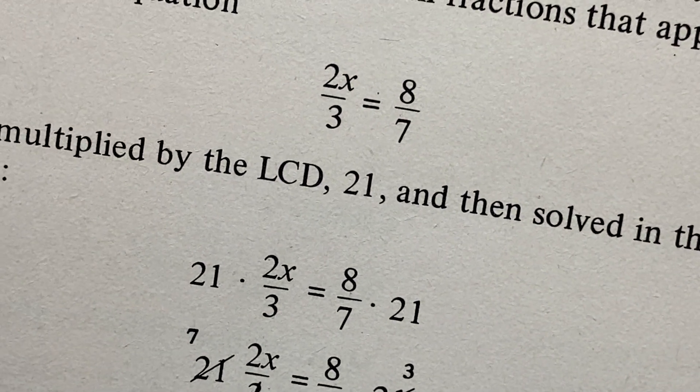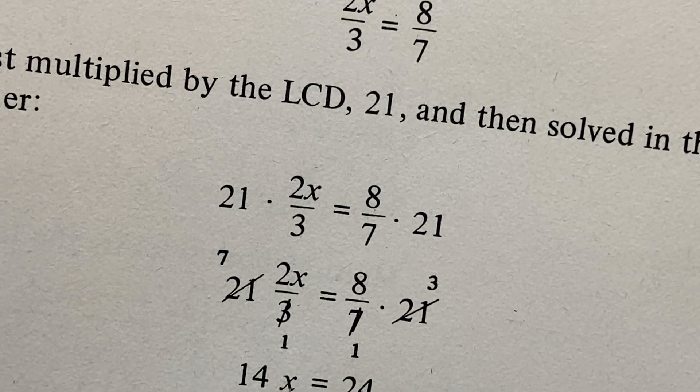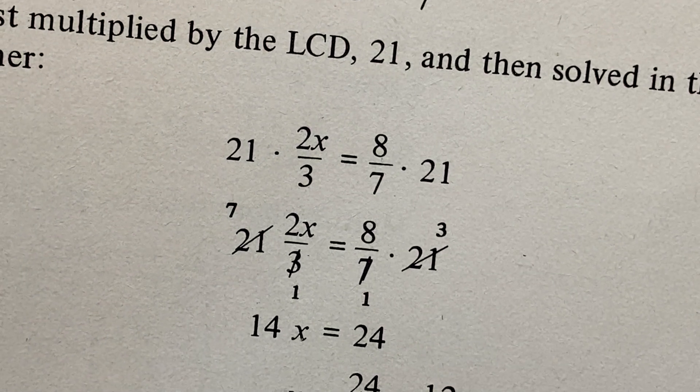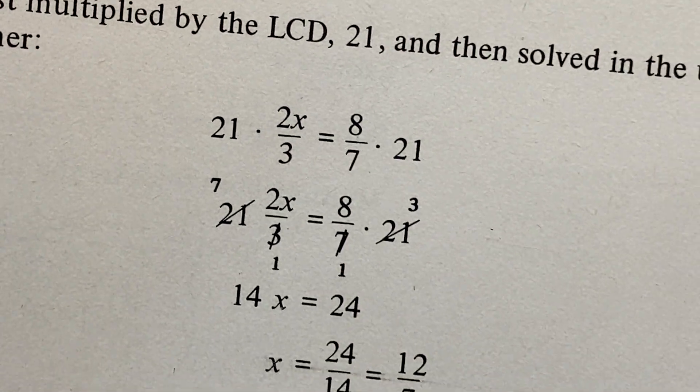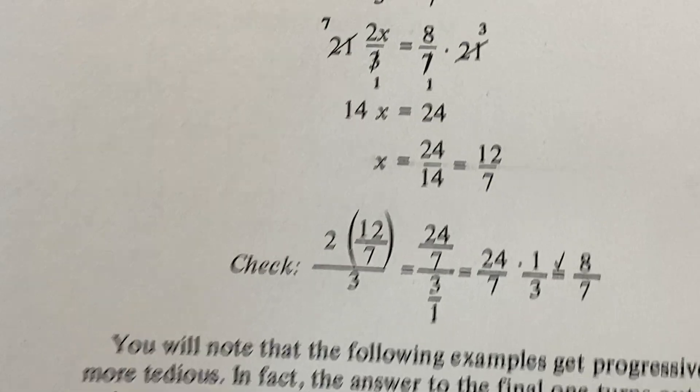But you can see they still make a serious effort to show all the steps. For example, we're trying to solve 2x over 3 equals 8 over 7. So they multiply both sides by 21. I love how they show the work. That's exactly how I do it. So that's really great. So that's really good work. Especially for a book from 1981.